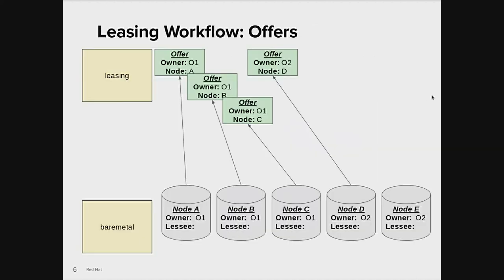Let's dig a little deeper into the hardware leasing system workflows. We'll start with the creation of offers. Let's say that the bare metal inventory has five nodes, A through E, with nodes A, B, and C owned by owner O1, and nodes D and E owned by owner O2. Owner O1 is not using any of their nodes, so they offered them up in the leasing service by creating an offer for each of their nodes. Owner O2 isn't using node D, so they offered it up as well.